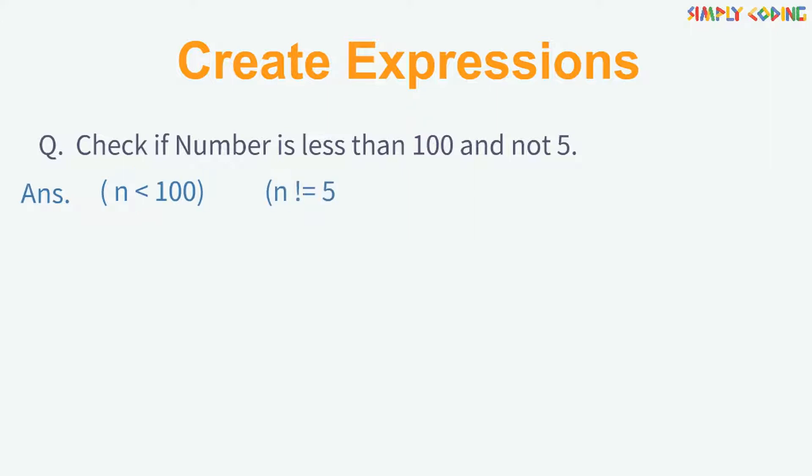Now, let's write some expressions using the logical operators. First is, check if number is less than 100 and not 5. Here, we will first form two expressions for less than 100 and not 5. And then, we will join them by using logical operator AND.